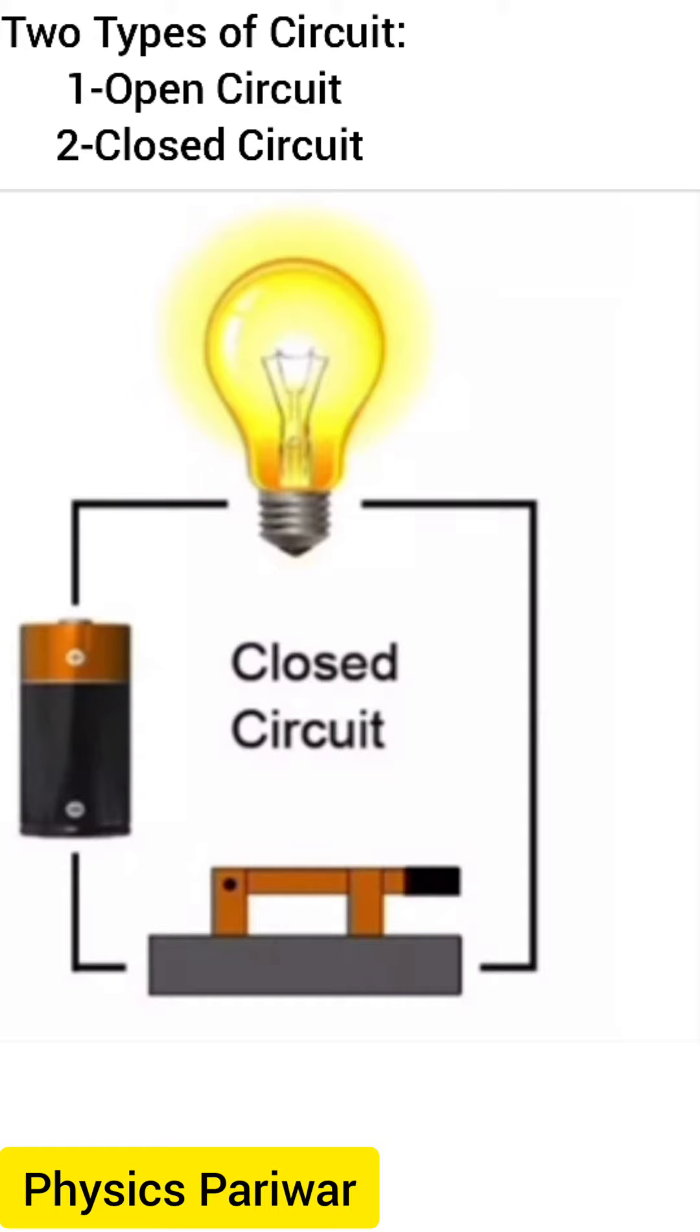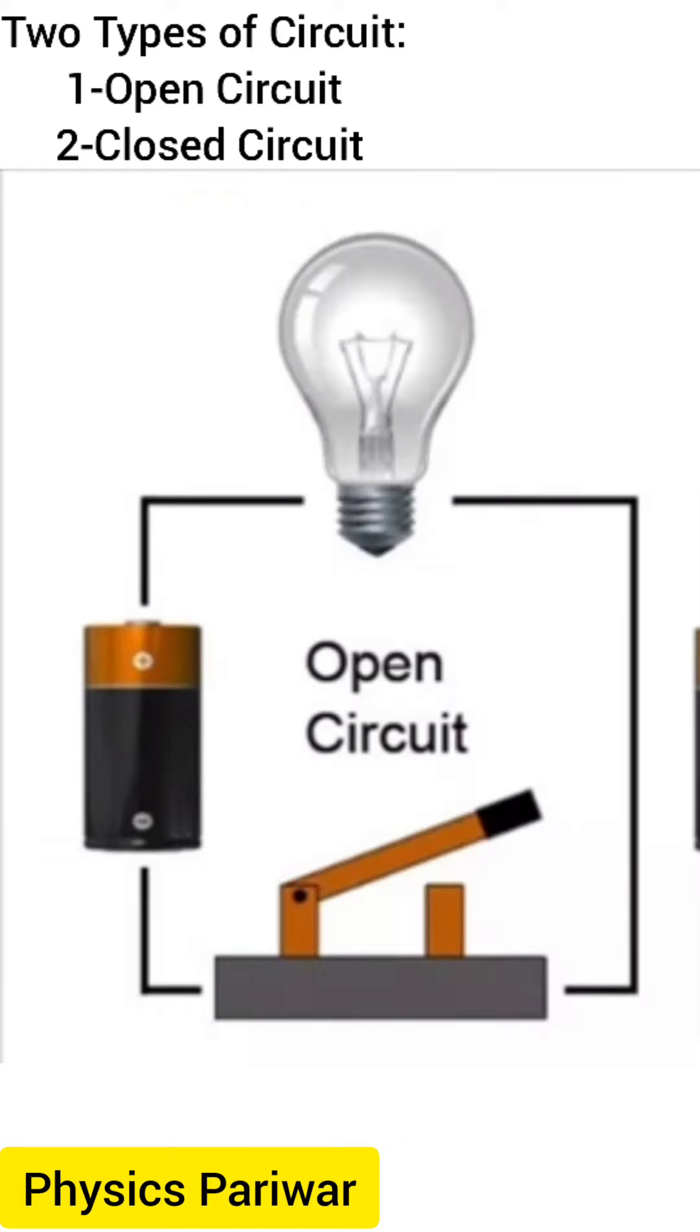Closed circuit means complete electric connection around which current flows or circulates. It is called closed circuit. Now we are going to discuss open circuit.